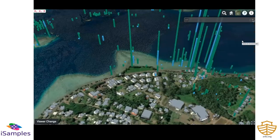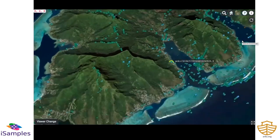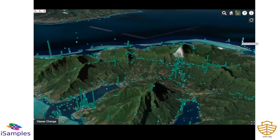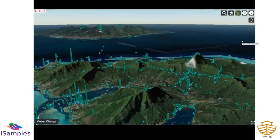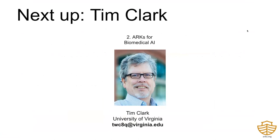This simple linking between samples is facilitated by ARK identifiers. There are literally millions of these records already in iSamples, and the number of participating collections is anticipated to expand significantly as the project continues. In conclusion, globally unique resolvable identifiers are being widely adopted by the Earth Science community as a common mechanism for referencing physical samples and all derived products. ARK identifiers are a good match for the technical requirements and fill an increasingly prominent role for the Earth Sciences community. Now I'm going to turn things over to Tim Clark to present our next use case.